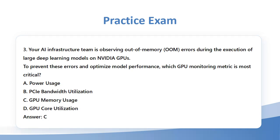Question 3: Your AI infrastructure team is observing out-of-memory errors during the execution of large deep learning models on NVIDIA GPUs. To prevent these errors and optimize model performance, which GPU monitoring metric is most critical? A. Power usage. B. PCIe bandwidth utilization. C. GPU memory usage. D. GPU core utilization. Answer: C.